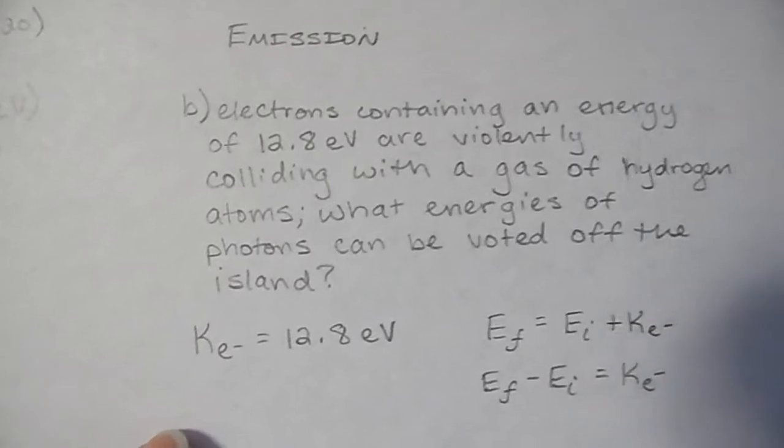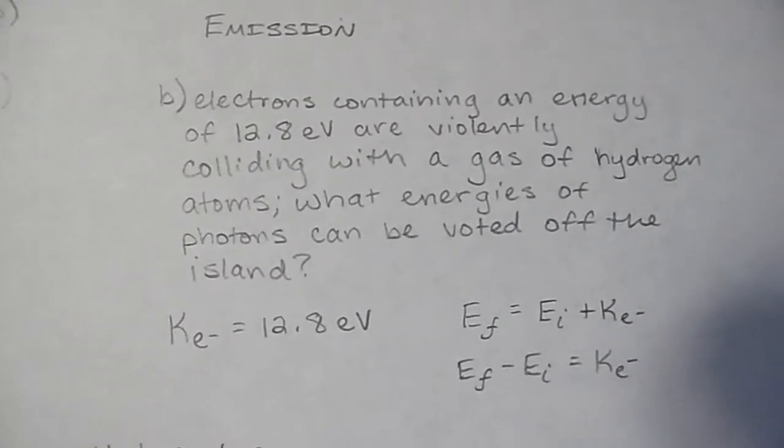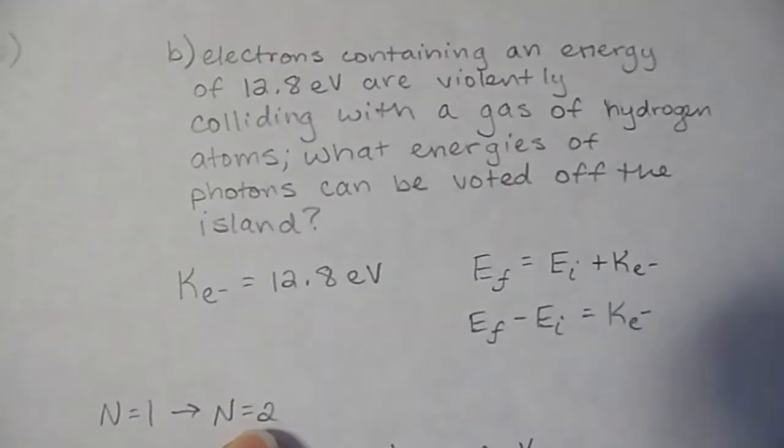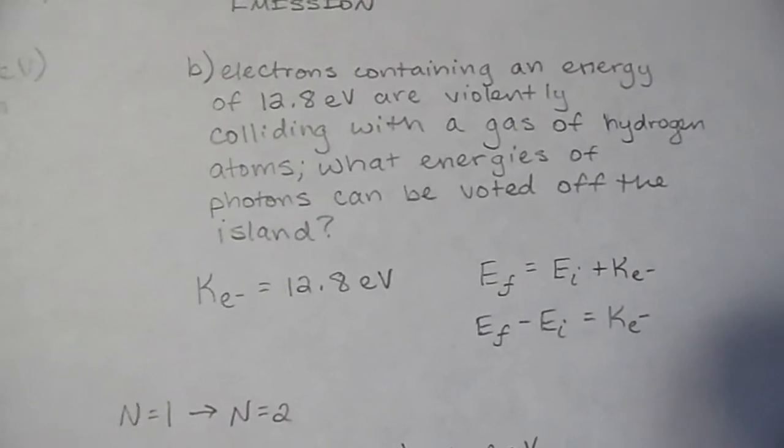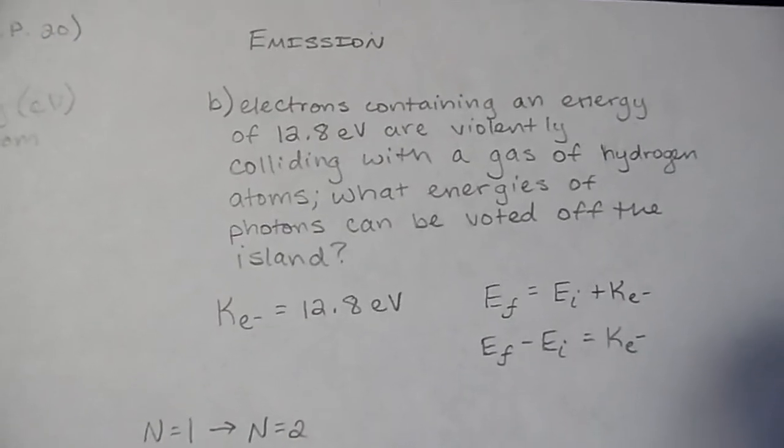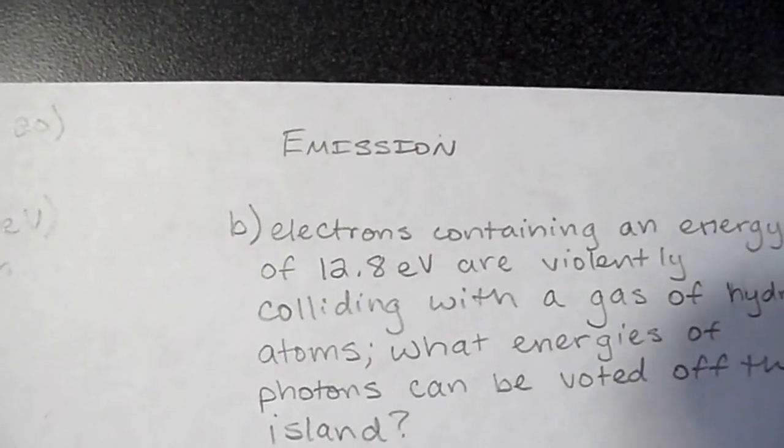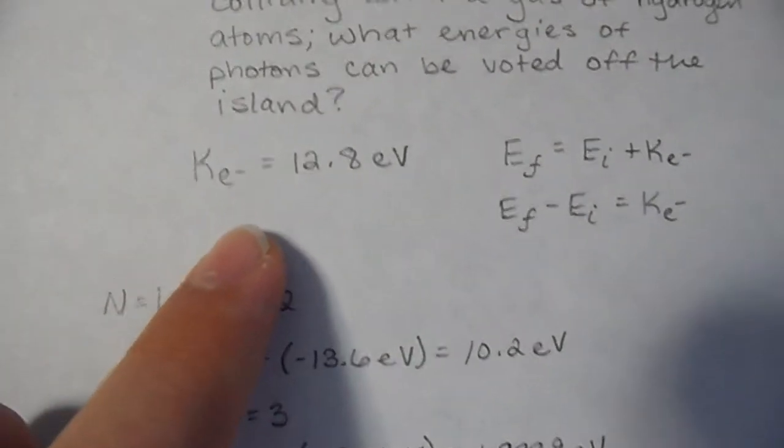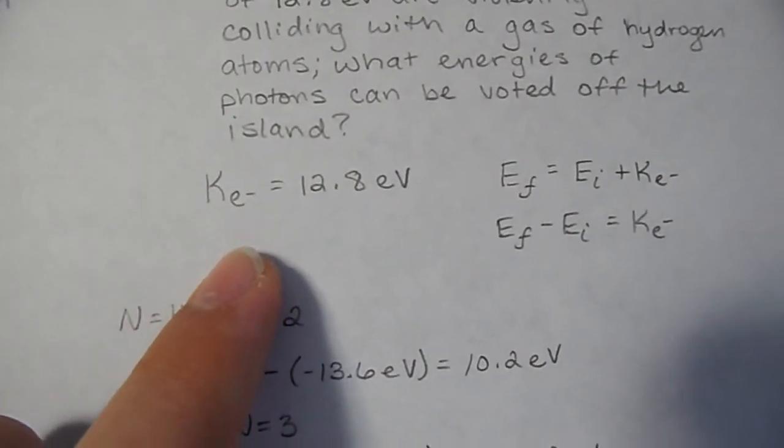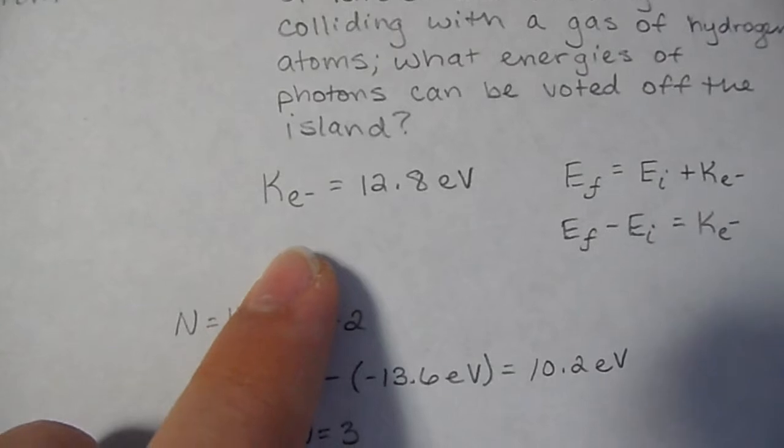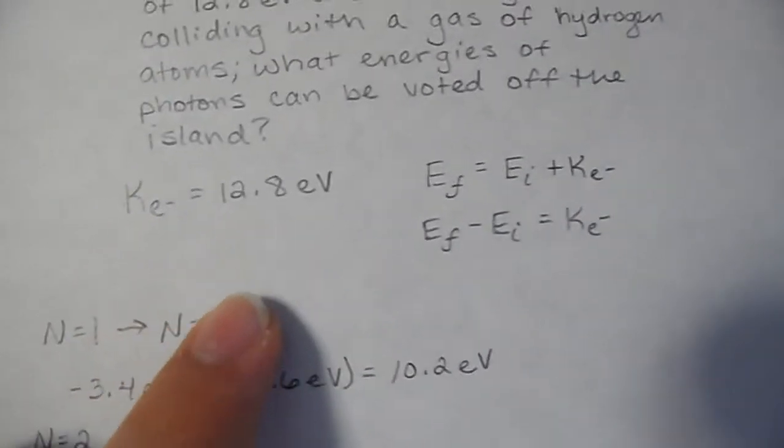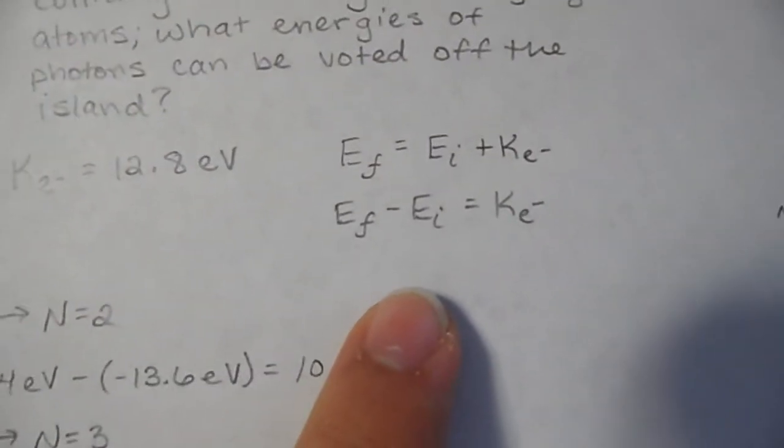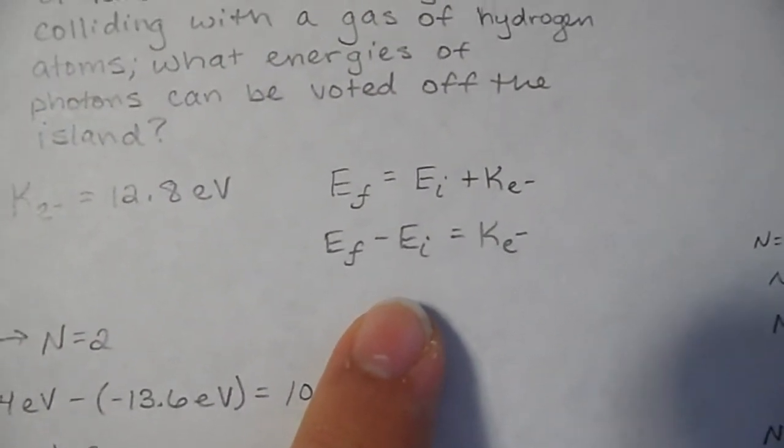Now part B asks us if we have some electrons violently colliding with this hydrogen gas, and we want to find what kind of photons will be emitted. The main idea is emission. We're given that the energy of these electrons is 12.8 electron volts.